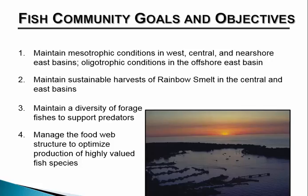I also want to put these charges in the context of some of the fish community goals and objectives. The first is to maintain mesotrophic conditions in the west, the central, and the near shore eastern basin, and to maintain oligotrophic conditions in the waters of the east offshore basin. The second is to maintain a sustainable harvest of rainbow smelts in the central and east basins. Third, to maintain a diversity of forage fishes that support predators of interest. And fourth, to manage the food web structure and optimize production of highly valued fish species. I'm going to come back to give a report about how well we're doing regarding these goals.